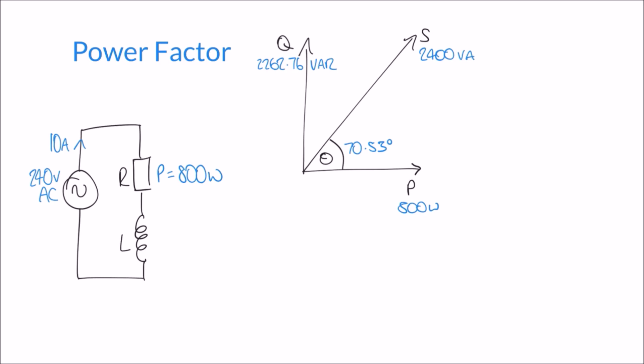We've now completed our power triangle and we know the values of the three different types of power in our circuit. We've also calculated the power factor and the phase angle. One other useful thing we can do with this example is use our values of power to determine the parameters of the components in our circuit — we have a resistor and an inductor, and we don't know the resistance or the reactance, but we can work them out now because we know the powers.